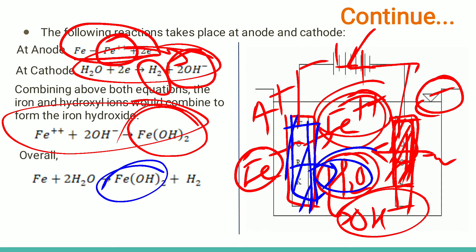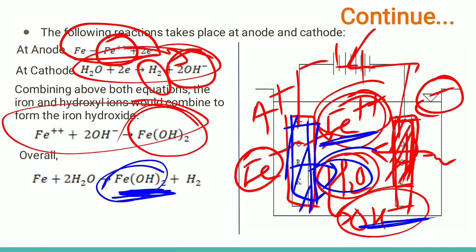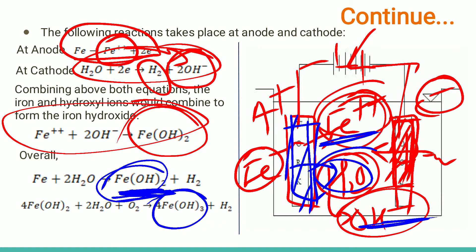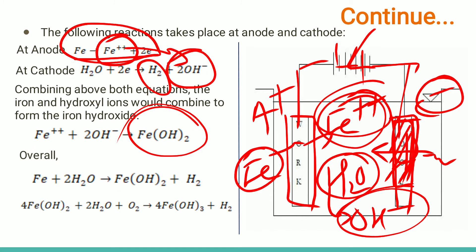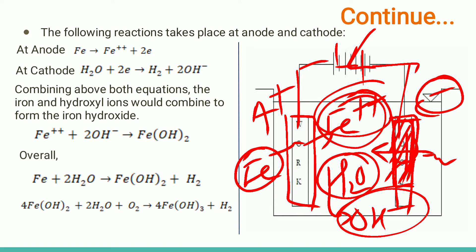When Fe(OH)₂ is being formed, material is continuously removed from the workpiece surface — Fe⁺ ions and OH⁻ ions are continuously released from the workpiece and electrolyte respectively. There is also a possibility that Fe(OH)₂ can react further. Fe(OH)₂ can react with water and available oxygen gas to form Fe(OH)₃ as well. So these are the sludges formed when the workpiece material reacts with the electrolyte.